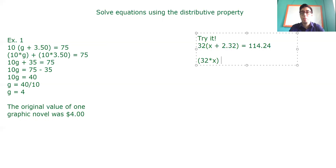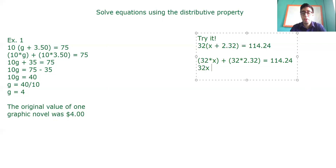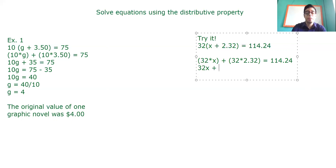We have 32 times x plus 32 times 2.32, and this is a multiplication equal to 114.24. Remember, the distributive property means I multiply this term by all the terms inside the parenthesis — 32x and 32 times 2.32. I write the result: 32x plus, and here I need to find the result for 32 times 2.32. 32 times 2.32 is 74.24. This equals 114.24.